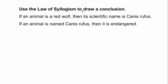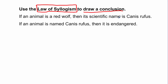Here it says: use the law of syllogism to draw a conclusion. I need to know the law of syllogism in order to do this problem, and they want me to come up with a conclusion. We have two conditional statements: if an animal is a red wolf, then its scientific name is Canis Rufus; and if an animal is named Canis Rufus, then it is endangered.